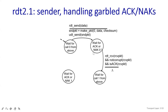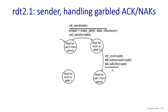Once the packet reaches the second stage, it will wait for a positive acknowledgement or a negative acknowledgement. It has to wait for 'call 1 from above' — that is, acknowledgement received or negative acknowledgement. On the receiver side, it will receive the packet, and if it is not corrupt and has an acknowledgement, then it receives the packet — meaning you are getting a positive acknowledgement.